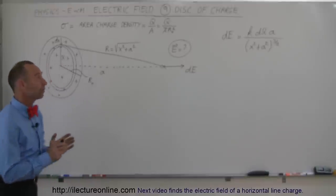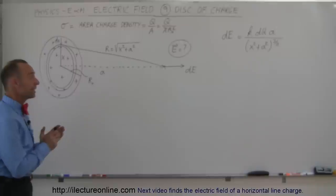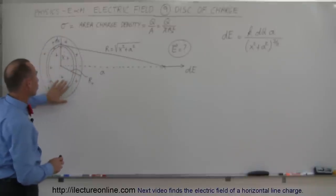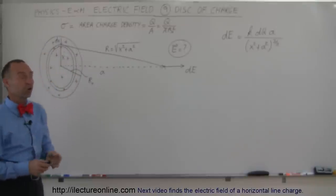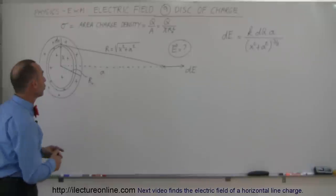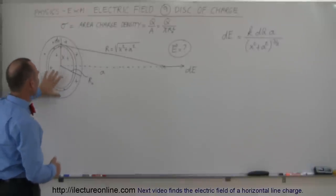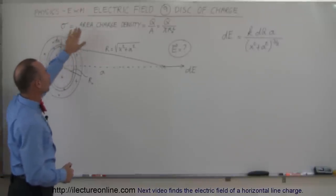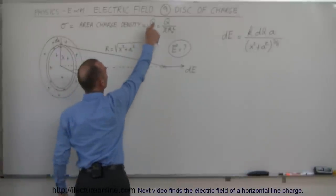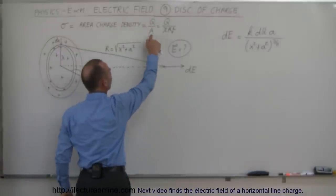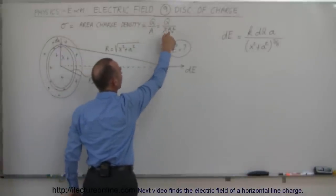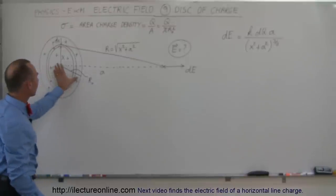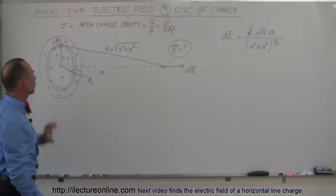Welcome to ElectronLine. Now we're going to try to find the electric field due to a solid disk of charge. Notice that we put Q amount of charge on the disk and divide it by the area to get what we call the area charge density — the charge placed on the disk divided by the area, or Q divided by pi r squared. I used r-sub-nought to indicate the radius of the disk.